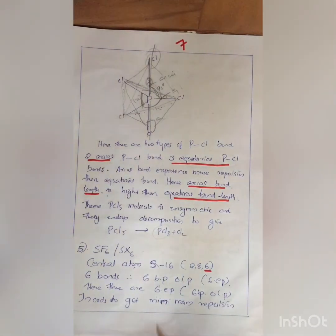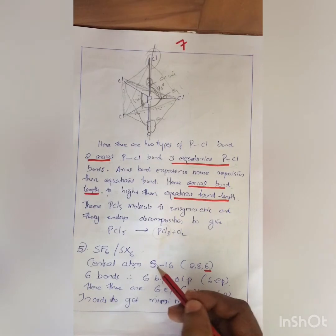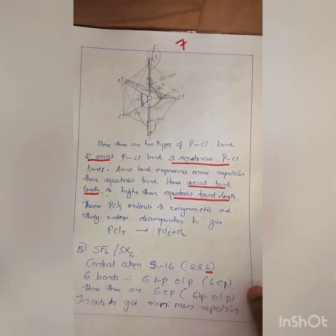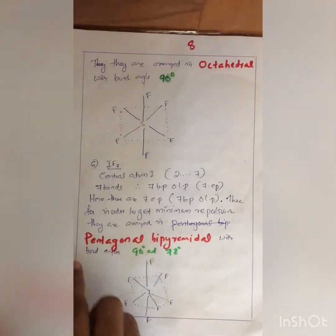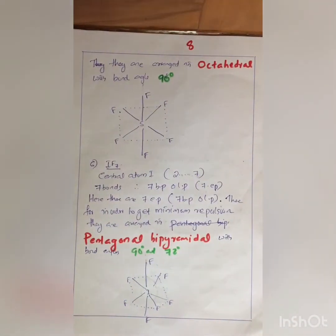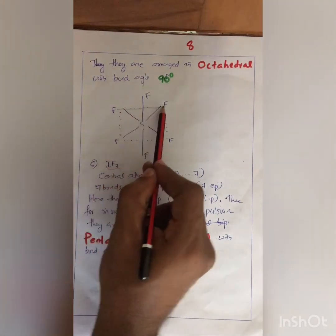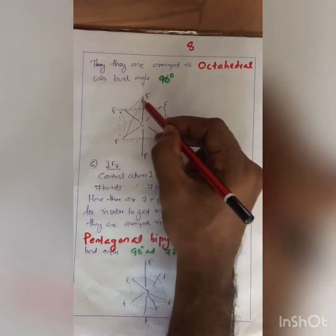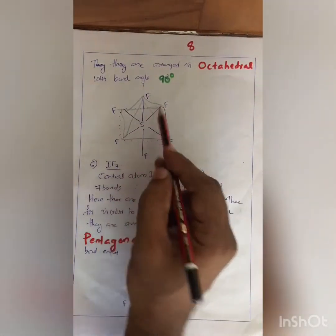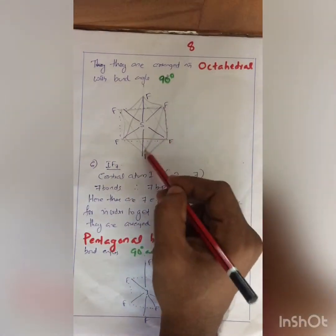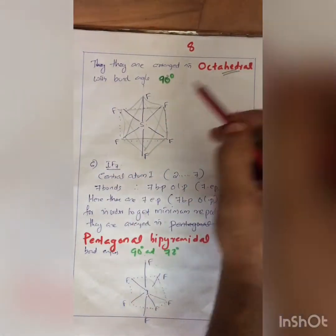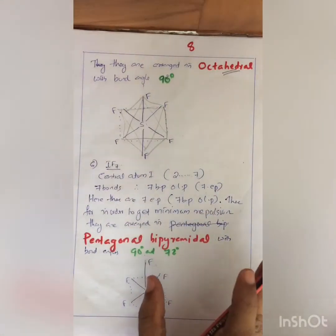The next molecule is SF6. The atomic number of sulfur is 16, configuration 2,8,6. There are 6 bonds: 6 BP, 0 LP, giving 6 EP. In order to get minimal repulsion, they are arranged in octahedral with bond angle 90 degrees. This is also known as square bipyramidal because it has two pyramids with square bases. It is called octahedral because it has 8 faces.